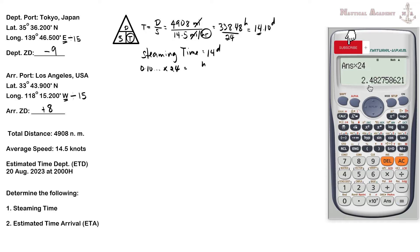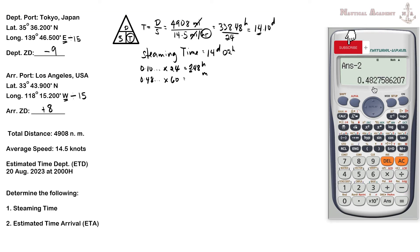Multiplying the remaining decimal by 24 gives 2.48 hours. The whole number is 2 hours. The remaining decimal 0.48 is then multiplied by 60 to find the minutes: 0.48 × 60 = 28.9 minutes, rounded to 29 minutes. Therefore, our steaming time is 14 days, 2 hours, and 29 minutes from Tokyo, Japan to Los Angeles, USA.